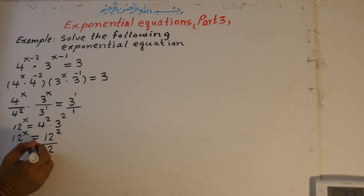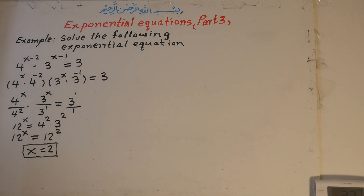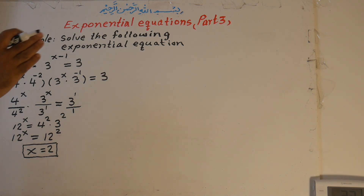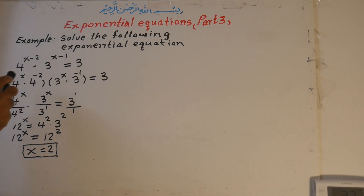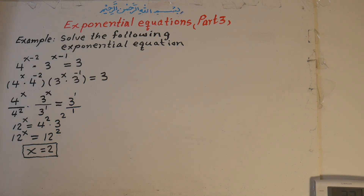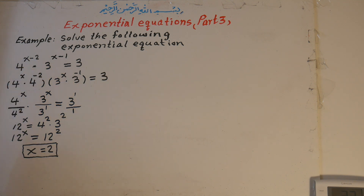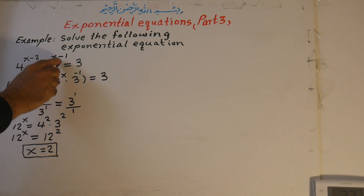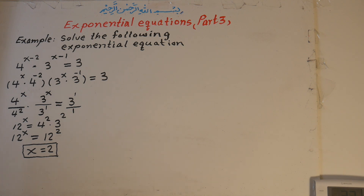It means this was a first-order equation with one unknown, and the solution is 2. To repeat: for Exponential Equations Part 3, example — solve the following exponential equation: 4 to the power of x minus 2, times 3 to the power of x minus 1, is equal to 3. Now, we can separate these two in a multiplication condition: 4 to the power of x times 4 to the power of negative 2, and 3 to the power of x times 3 to the power of negative 1, equal to 3, or 3 to the power of 1.